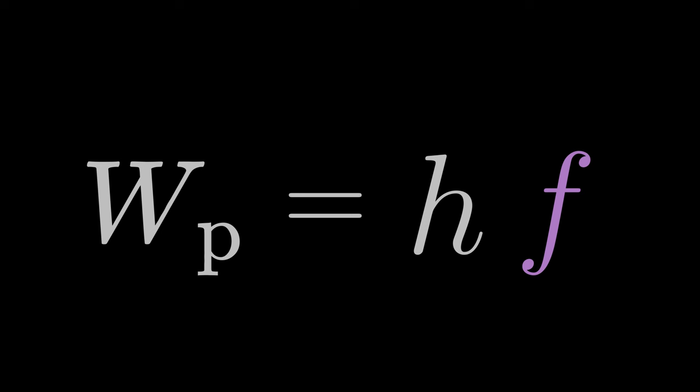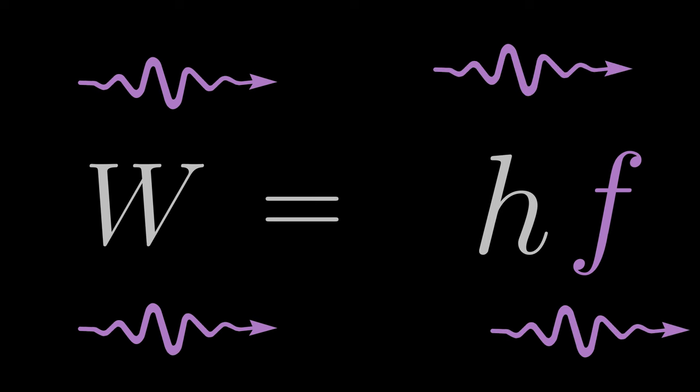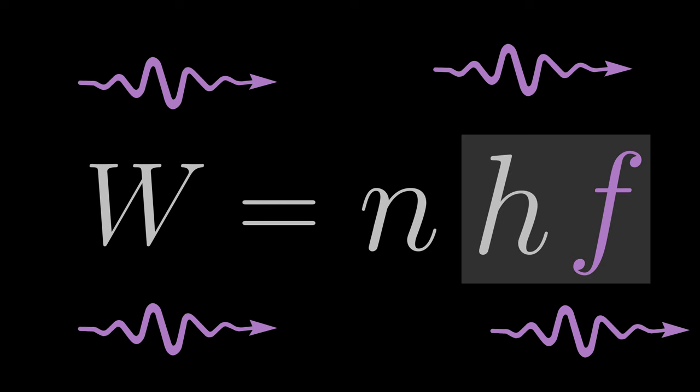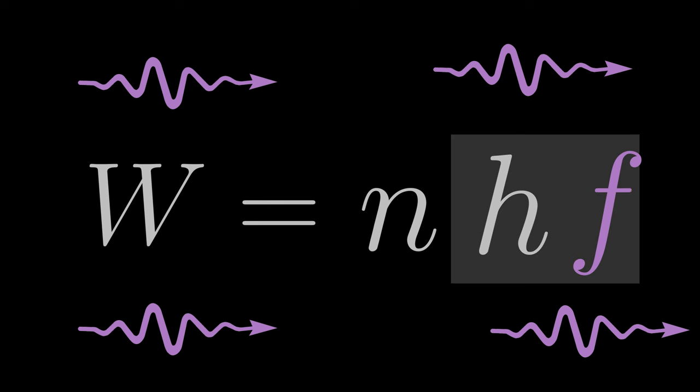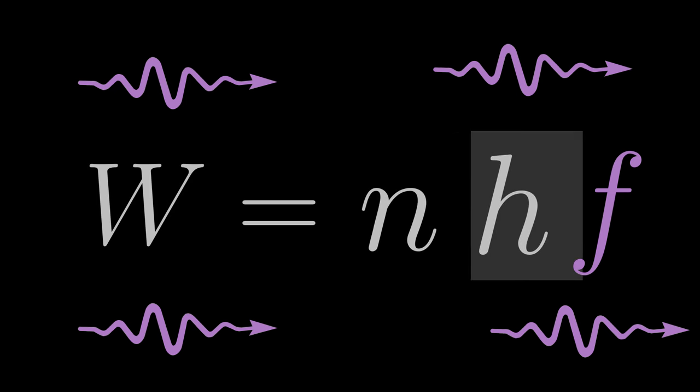The formula for photon energy only tells us how large the energy of a single photon is. If we want to know what the energy of many photons is, we must determine their number, n, and multiply it by the energy of a single photon. The energy of n photons is equal to n times H times F.